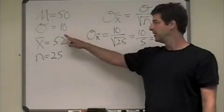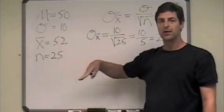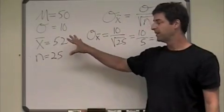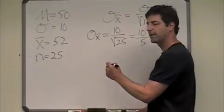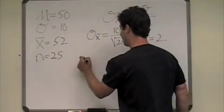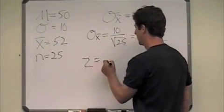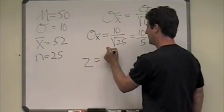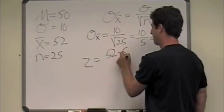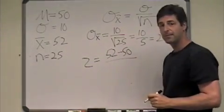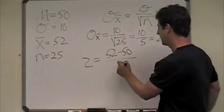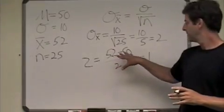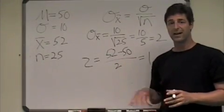Next, since we know the population standard deviation and we're using Appendix A to find probabilities, this is a z-score problem. So we calculate the z-score. Z equals the difference between these two means - that's the top. The denominator is the standard error. And 2 divided by 2 is 1. So that's our z value.